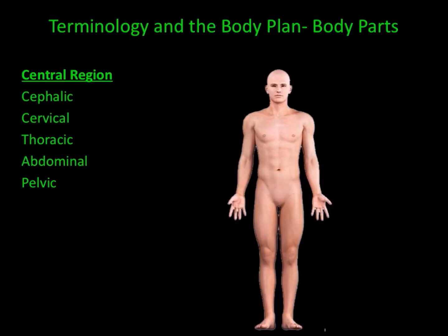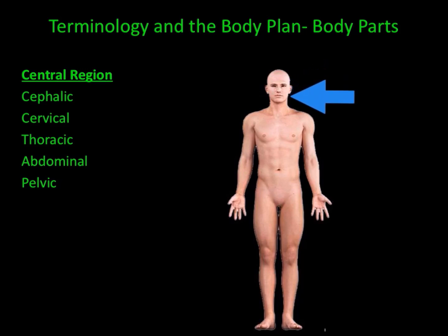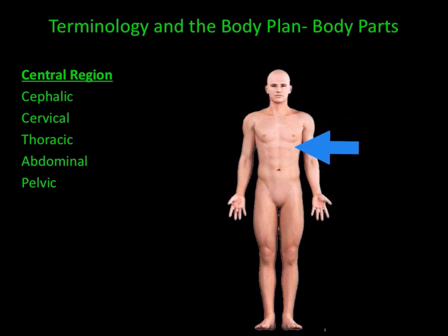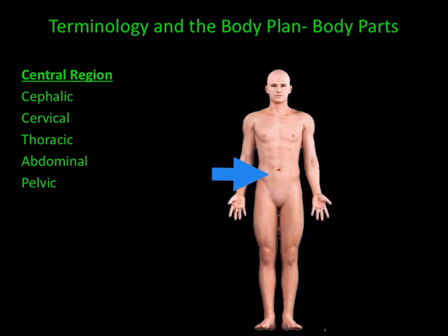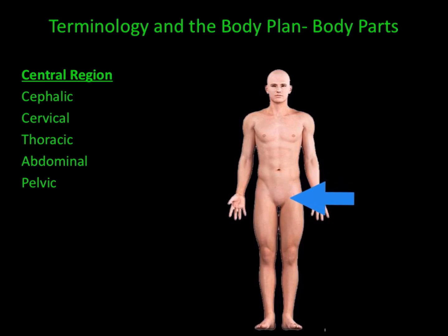Learning the different body parts of the human body is like learning a foreign language. Let's take a look at the body parts in the axial skeleton or central region. Cephalic refers to the head. Cervical refers to the neck. Thoracic refers to the chest area. The abdominal region refers to the midsection or abdomen. And finally, the pelvic region refers to the hip or pelvis area.